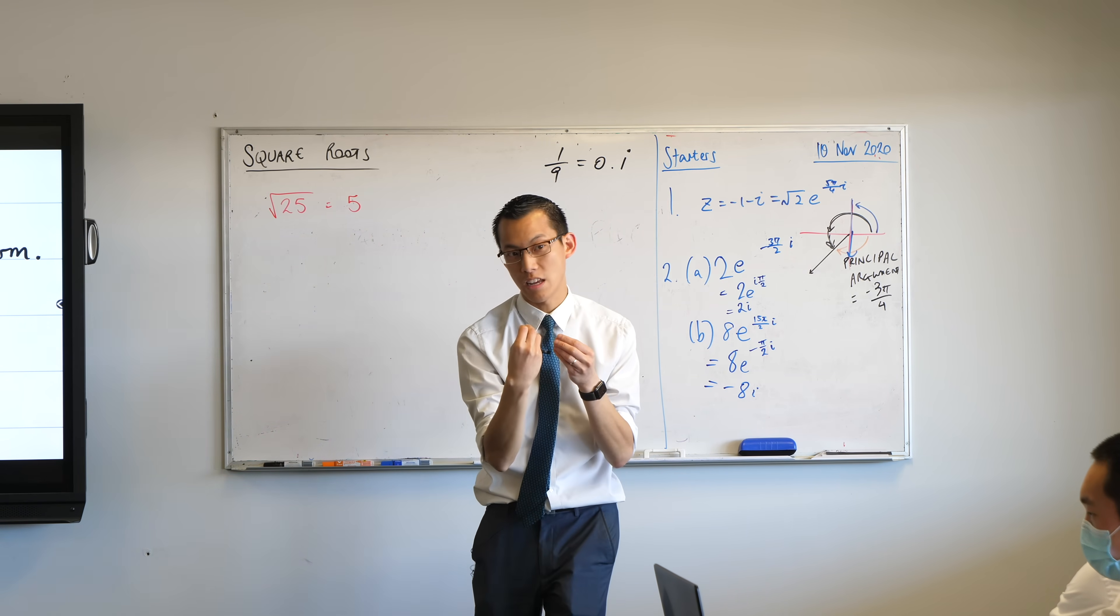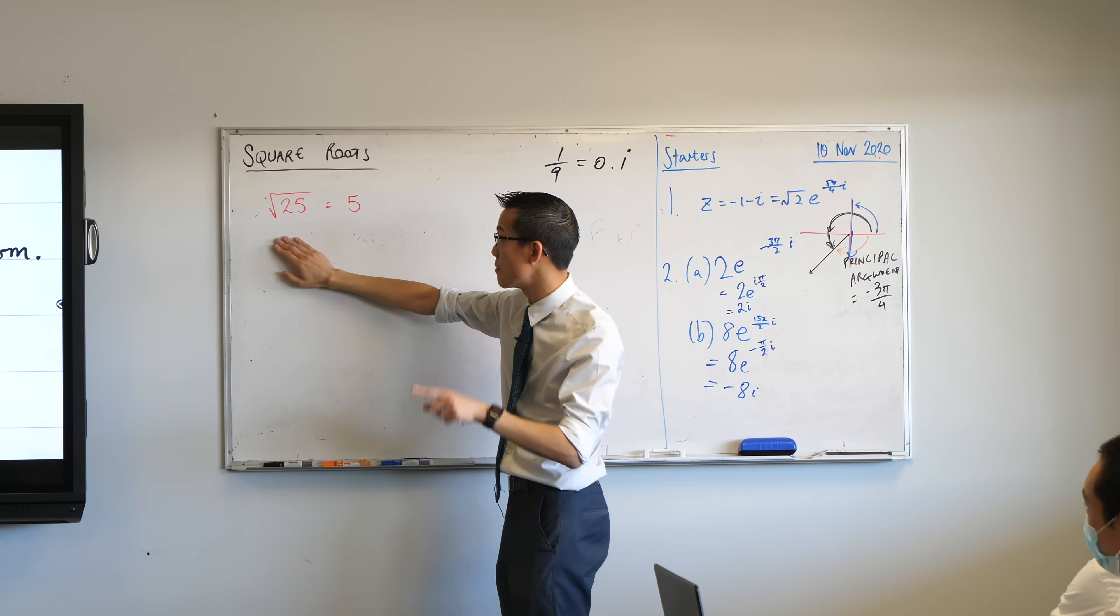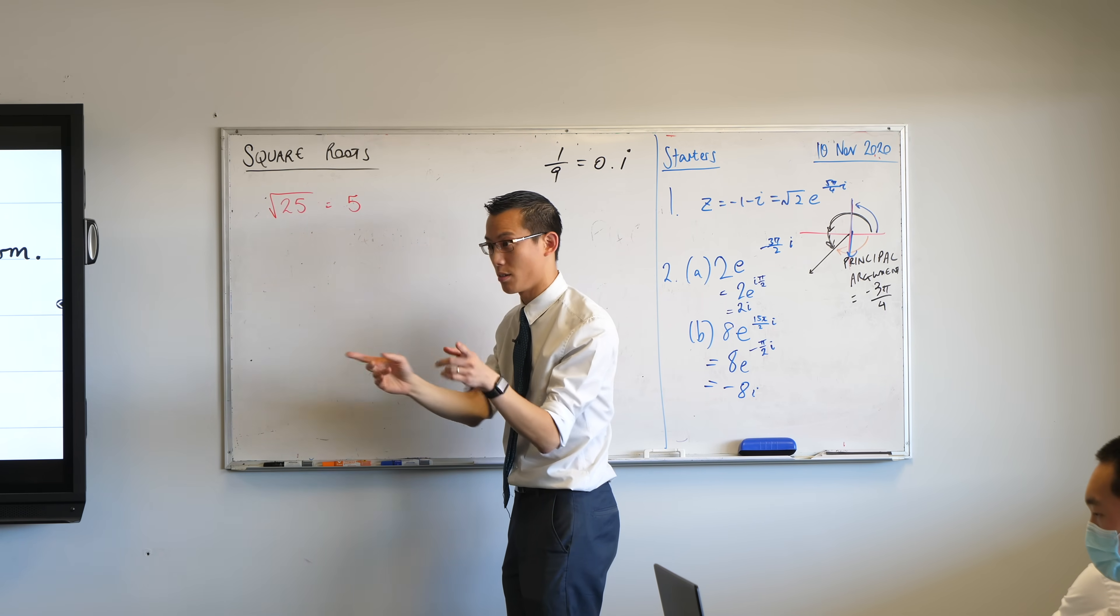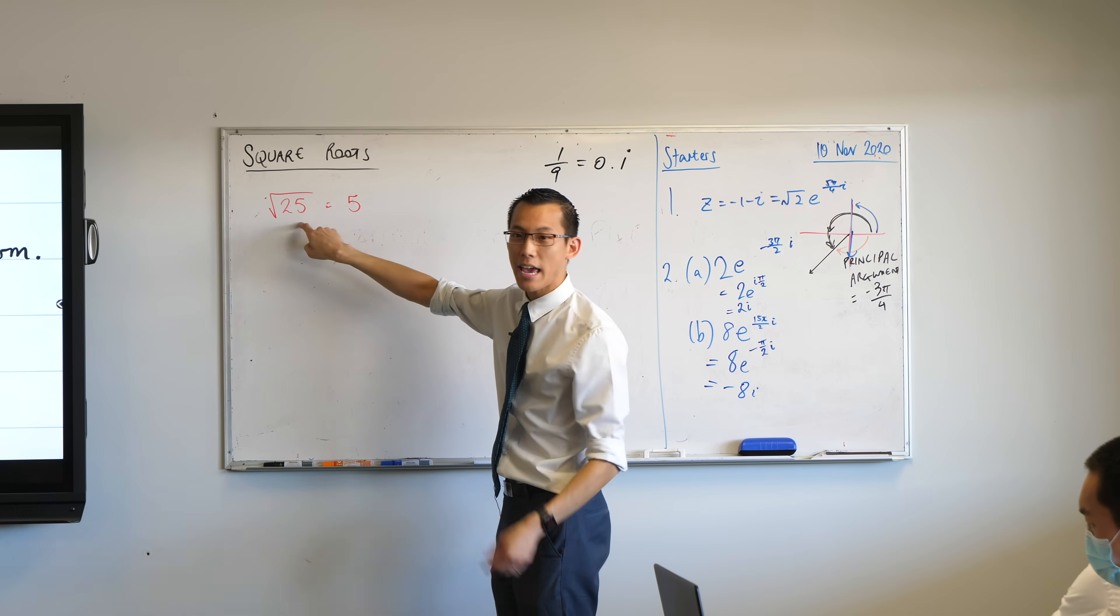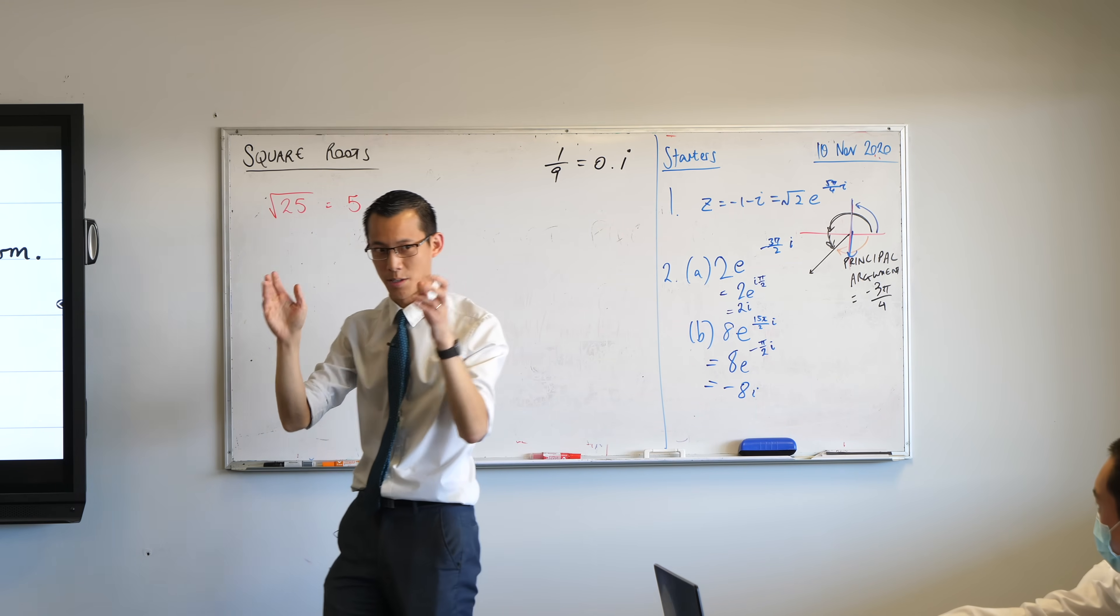How would you articulate in words, before you had symbols, to explain what was going on? This is actually really important for when we talk about complex numbers square roots. Can I give you 30 seconds to turn to the person beside you and give me a verbal definition of what a square root is? Go.